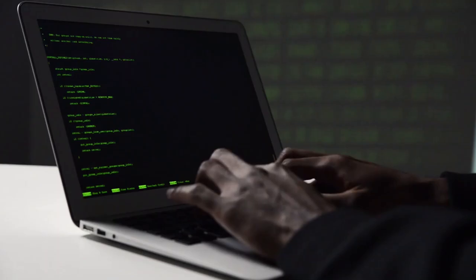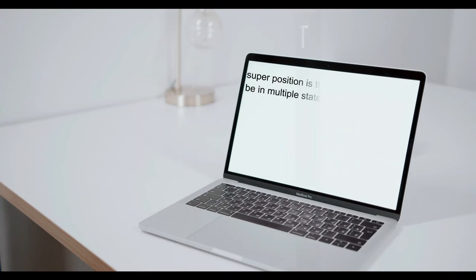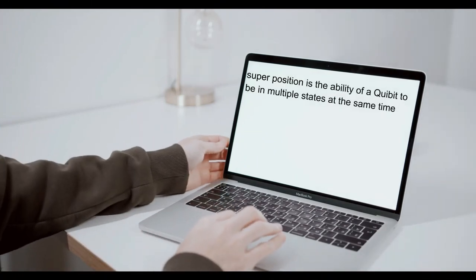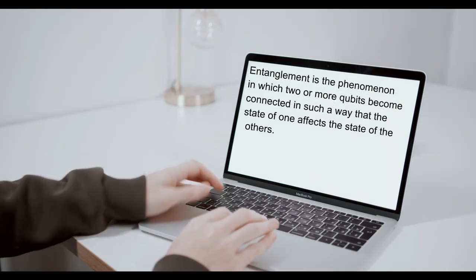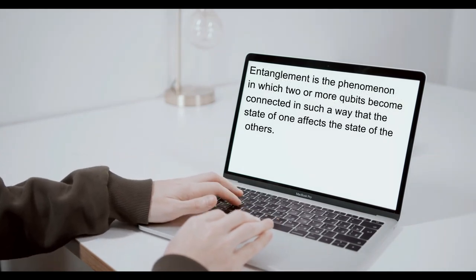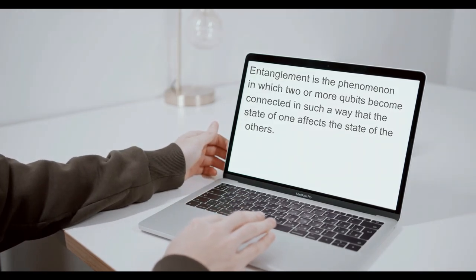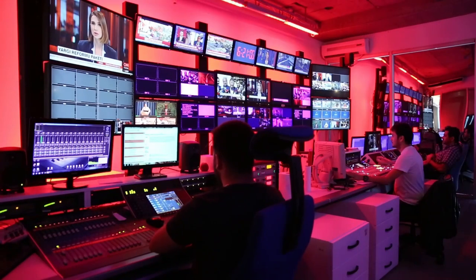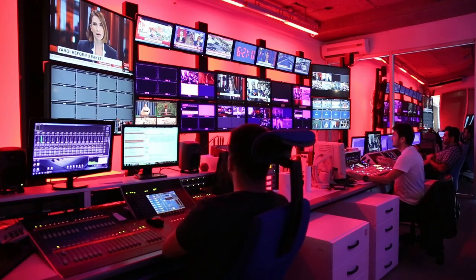One of the key features of quantum computing is that it takes advantage of the principles of superposition and entanglement. Superposition is the ability of a qubit to be in multiple states at the same time, while entanglement is the phenomenon in which two or more qubits become connected in such a way that the state of one affects the state of the others. These phenomena allow quantum computers to perform certain types of calculations much faster than classical computers.